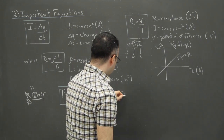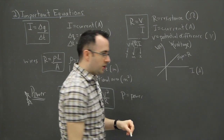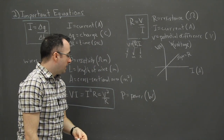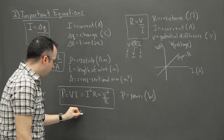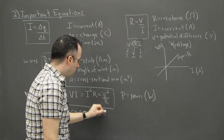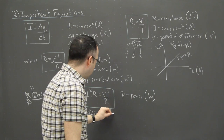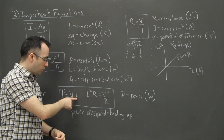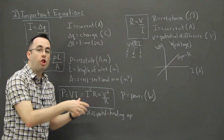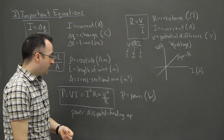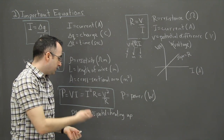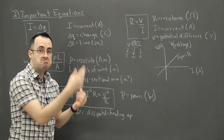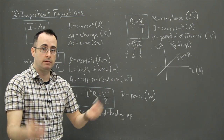P is power, measured in watts. Power dissipated — a word commonly used in circuits — just means the power being lost as heat. If we know the current and potential difference through a resistor, we know the power dissipated. Depending on what quantities you're given, use the appropriate form: I squared R if you have current and resistance, V squared over R if you have potential difference and resistance.